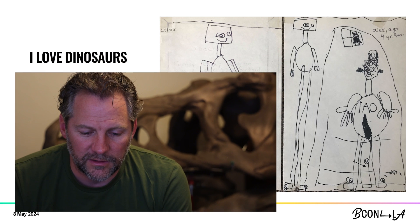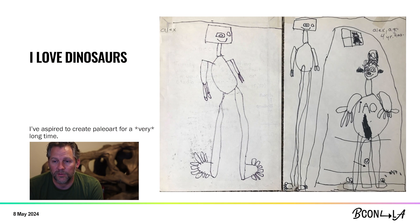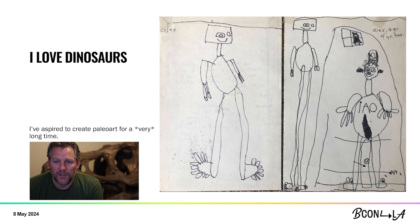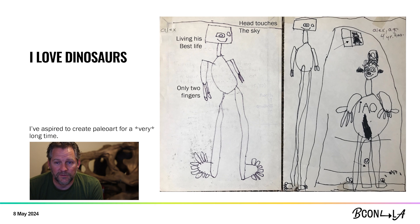I should start off by telling you that even before I could really walk or talk properly I've always been a dinosaur enthusiast. The reason I eventually learned Blender was because I saw Jurassic Park in theaters when I was 12 years old. Here's one of my very first pieces of paleo art. You can tell that this is a Tyrannosaurus Rex because he has two fingers, his head touches the sky, he's pretty happy with his place in the food chain, he's taller than a house.